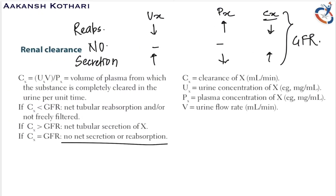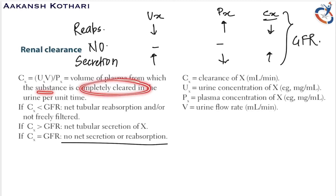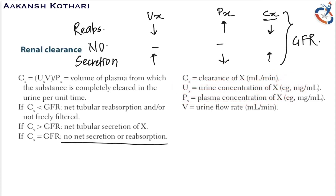Let us first start with renal clearance. Renal clearance is defined as the volume of plasma from which a substance is completely cleared or filtrated into the urine per unit time.